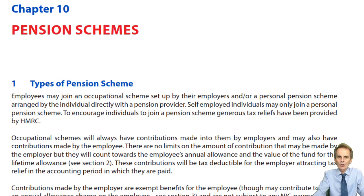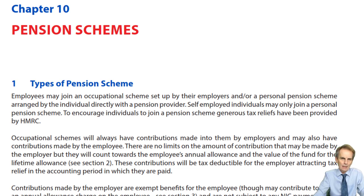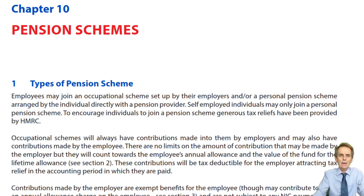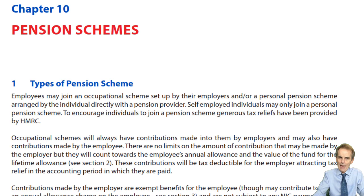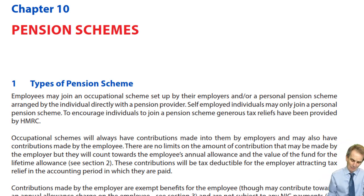In terms of chapter nine — employment income — what you may have is membership by an employee of an occupational pension scheme. What you saw back in chapter nine was how to deal with contributions made by an employee into their pension fund, and how also to deal with the pension contributions paid on behalf of the employee by the employer into that employee's pension fund. Review that — it will be useful because we will be going through those issues at the beginning of chapter 10 here, as you'll be doing in a few minutes time.